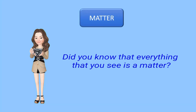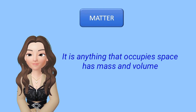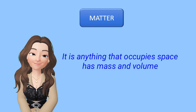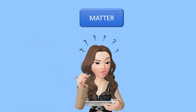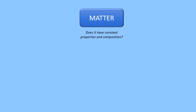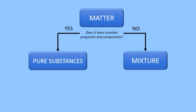Now look around you. Did you know that everything that you see is a matter? Matter is anything that occupies space, has mass, and has volume. What are the classifications of matter? Matter can be classified into two. If it doesn't have constant properties and composition, then it is a mixture. While if the matter has constant properties and composition, then it is a pure substance.